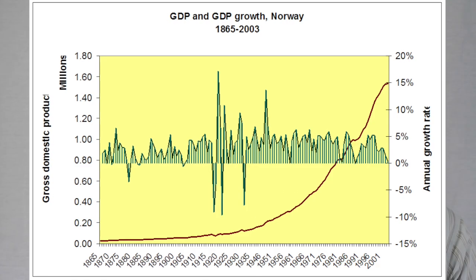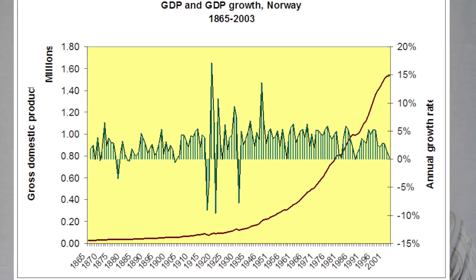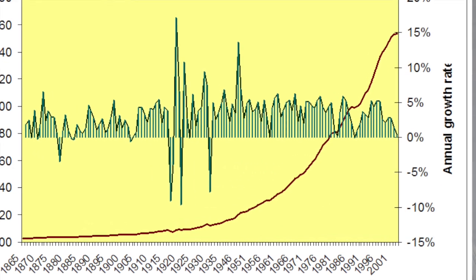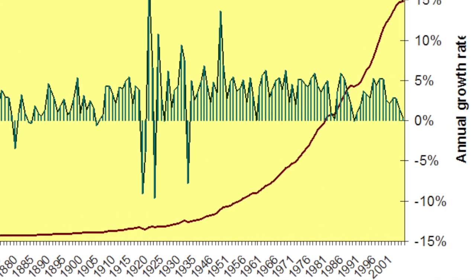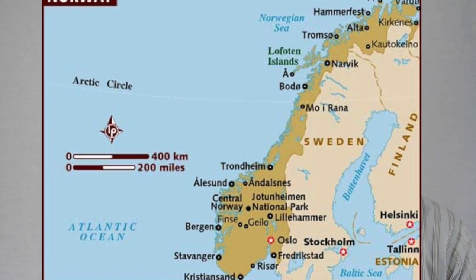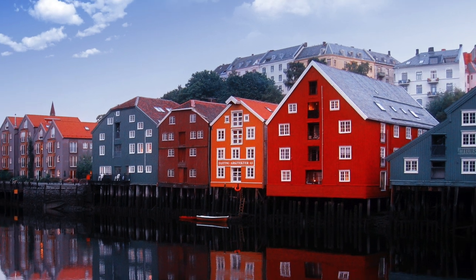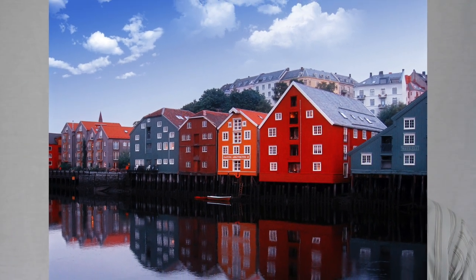Norway discovered oil in the North Sea in 1969, and it transformed their economy. During the 1970s, education employment doubled, and health and service sector employment quadrupled. Their economy grew a lot because of the oil money. It accounts today for about 30% of government revenues. Norway is very humanitarian and is deeply concerned with the welfare of their citizens. Because of that, they spread that oil money rather than concentrating it.